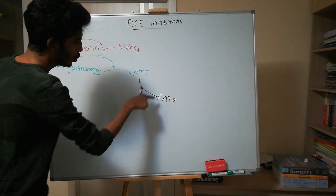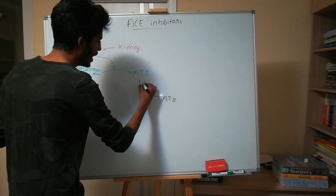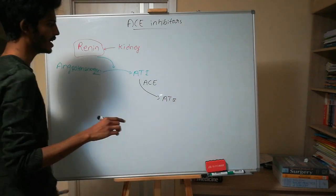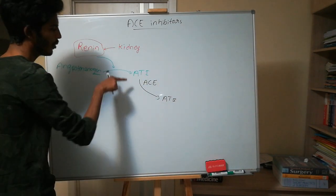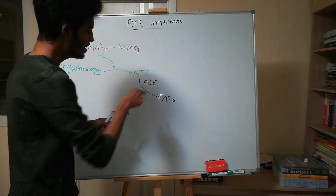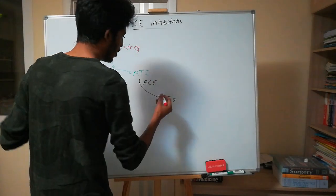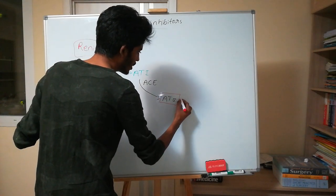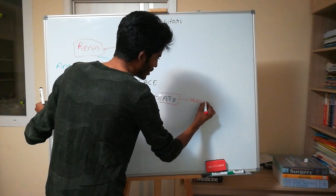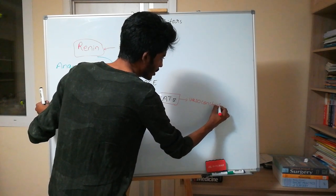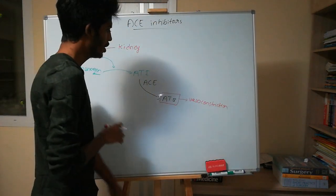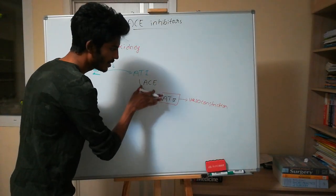The function of converting angiotensin one to angiotensin two is done by an enzyme called angiotensin converting enzyme, that is ACE. This angiotensin two, once formed, will have an effect of vasoconstriction by acting on the angiotensin receptors.